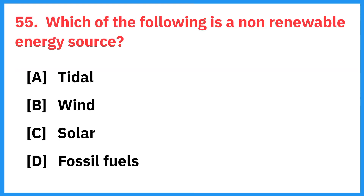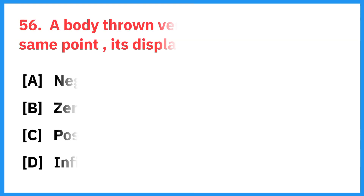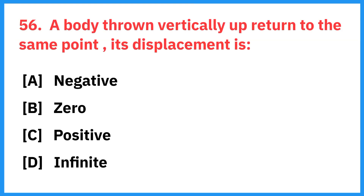Which of the following is a non-renewable energy source? Right answer is fossil fuel. A body thrown vertically returns to the same point — its displacement is? Right answer is 0.